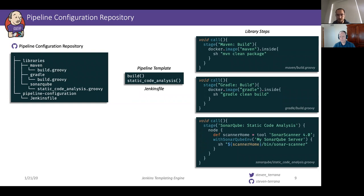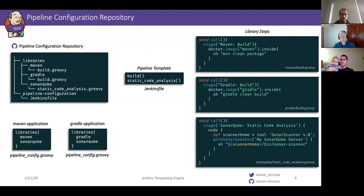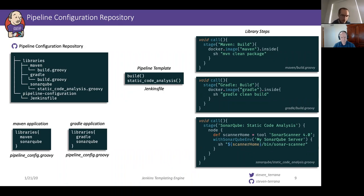In this example, the template is just build and then static code analysis. So then in each source code repository, instead of having an entire Jenkinsfile that hardcodes particular tool integrations, we can instead just have a pipeline configuration file. We know that both teams are going to inherit the same pipeline template, so all we need to know to run their pipelines is: what tools are you using? The Maven app's pipeline config just specifies that we want to load the Maven and SonarCube libraries. For the Gradle application, the only difference is that you're going to load the Gradle library instead of the Maven library. So at this point, we've separated the business logic from the technical implementation. We have a common centralized pipeline template that's a tool-agnostic workflow, and modularized implementations of different steps so we can dynamically compose our pipeline at runtime using these configuration files.